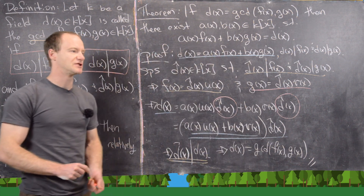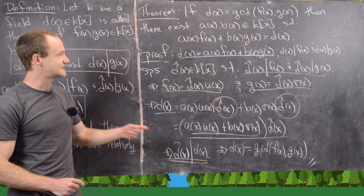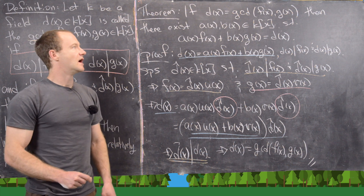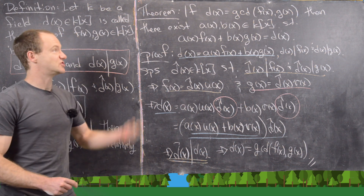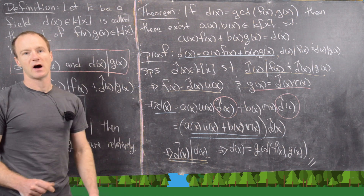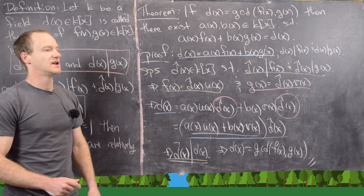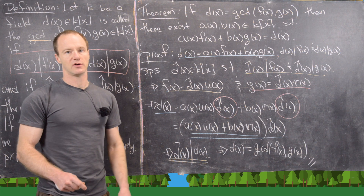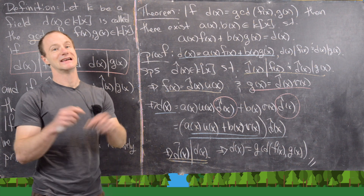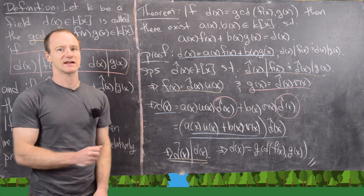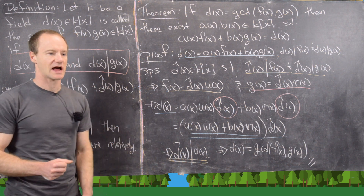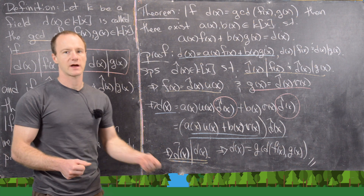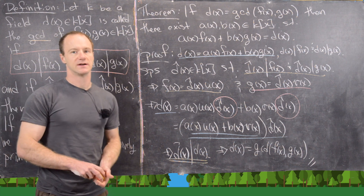That finishes the proof. In an upcoming video, I'll do some examples of writing the GCD of two polynomials as a combination of those two polynomials — it's essentially the extended Euclidean algorithm applied to polynomials.